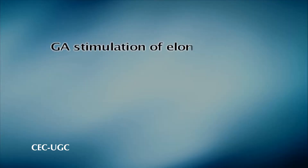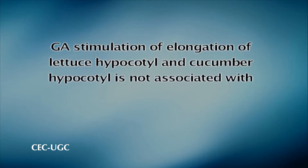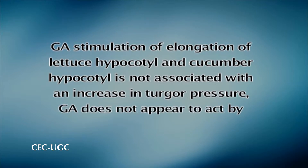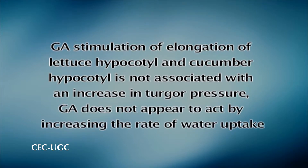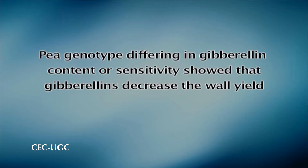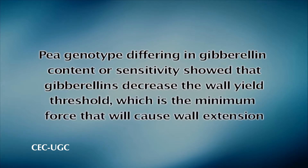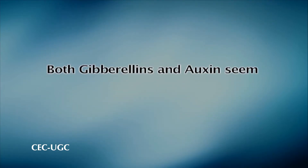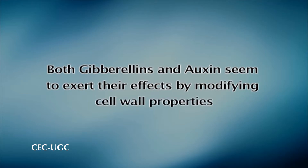This indicates that the mechanism of GA-induced cell elongation is independent of the orientation of cellulose microfibrils. The elongation rate can be influenced by both cell wall extensibility and the osmotically driven rate of water uptake. Since GA stimulation of elongation in lettuce hypocotyl and cucumber hypocotyl is not associated with an increase in turgor pressure, GA does not appear to act by increasing the rate of water uptake. In contrast, GA has consistently been observed to cause an increase in the mechanical extensibility of cell walls of living cells. An analysis of pea genotypes differing in gibberellin content or sensitivity showed that gibberellin decreases the wall yield threshold, which is the minimum force that will cause wall extension. Thus, both gibberellin and auxin seem to exert their effects by modifying cell wall properties.